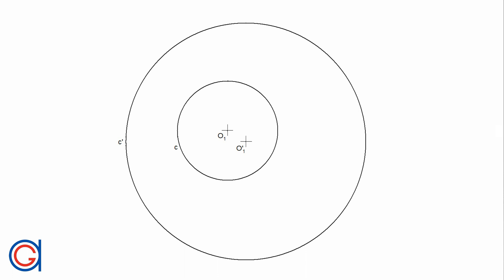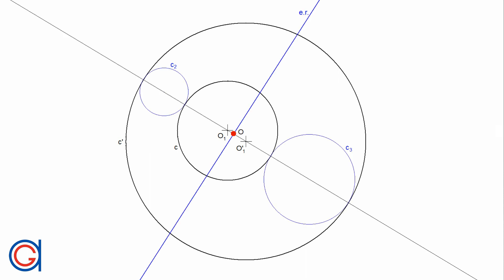This presents the hardest mid-circle construction because we have no easy way of finding the center point of the mid-circle. So first we have to construct a line R through both center points O1 and O'1 of the given circles C and C'. And on this line R, construct a pair of circles C2 and C3, each of which is tangent to both of the given circles C and C', as shown here on the screen.